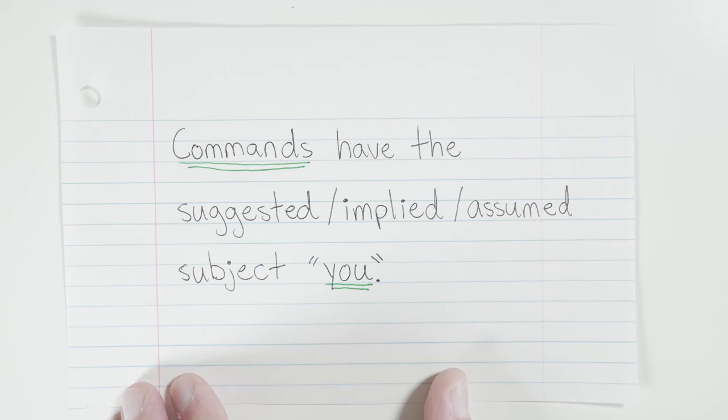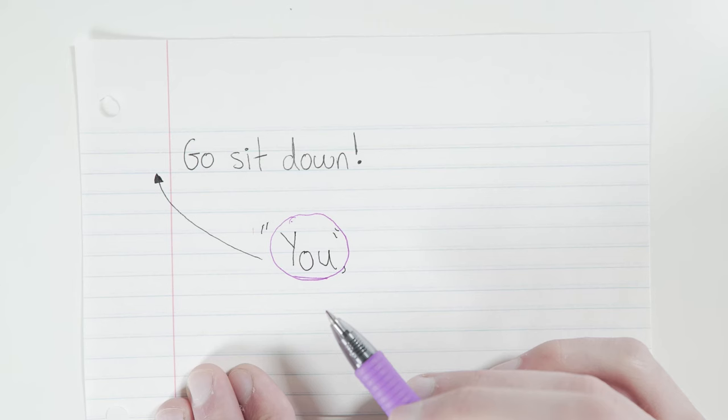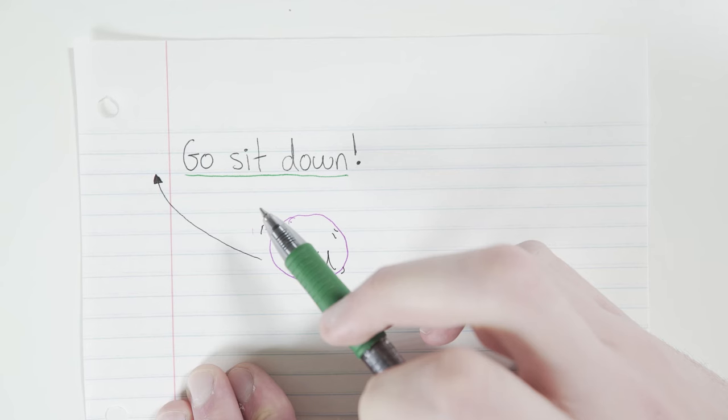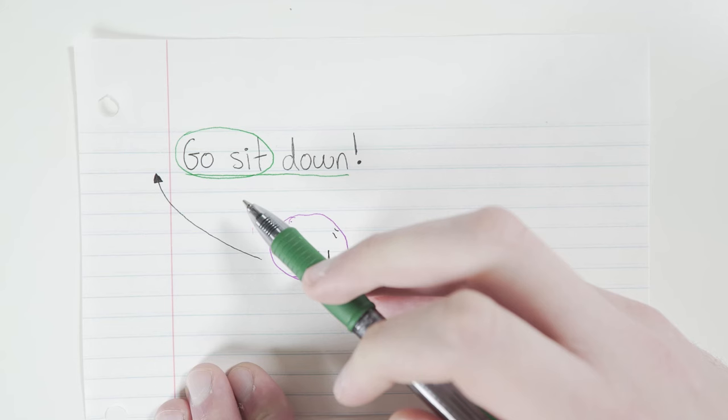Whether that means you singular, like just one person needs to go sit down, or whether it means you plural, like a whole group of people needs to sit down. Okay, so I can't really underline or circle my subject, because it's not actually written in the sentence. The actual writing you see is all predicate. Go sit down is all the predicate, with the simple predicate being go sit.